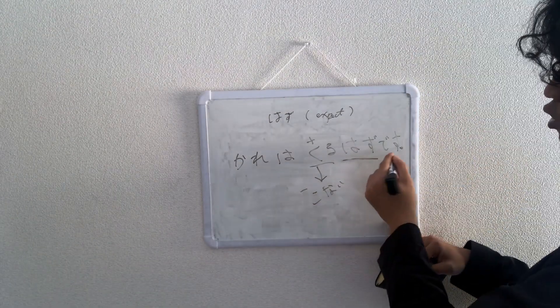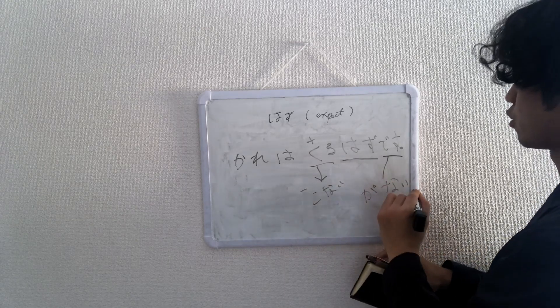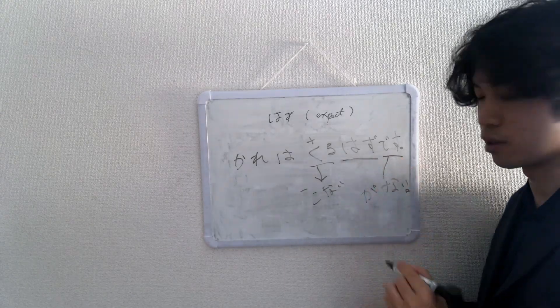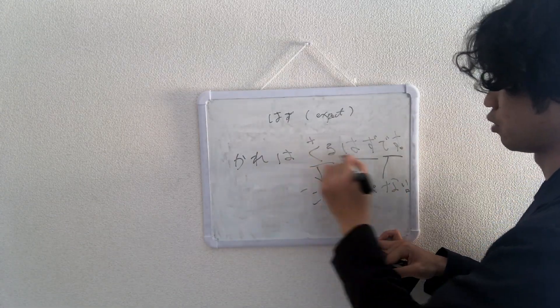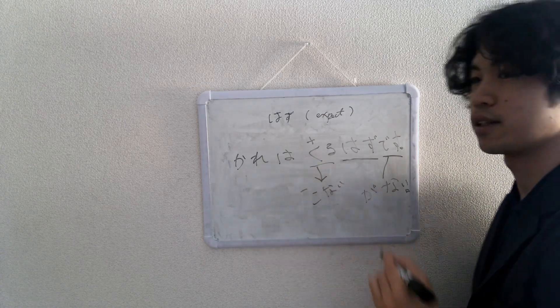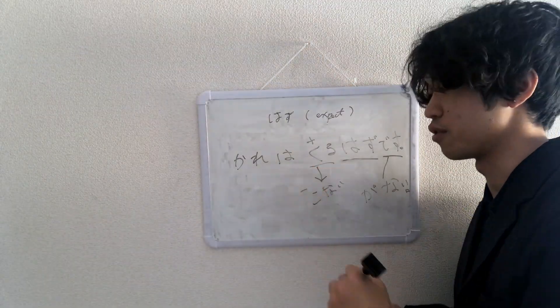Now however, if you change this part to がない, by the way, this is not the negative form of です, it's different. But if you change this to がない, in that case, 彼は来るはずがない. In that case, he can't come. There's no way he would come. So it's going to be stronger than the previous sentence.